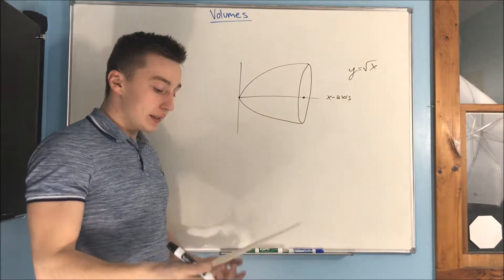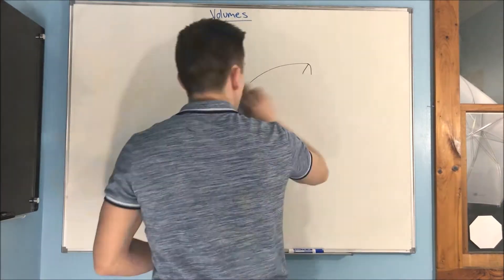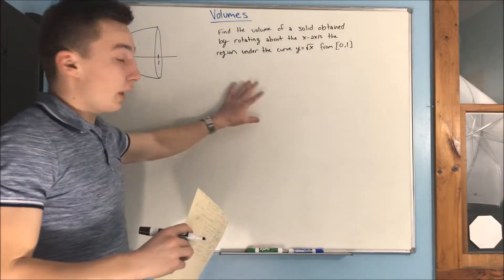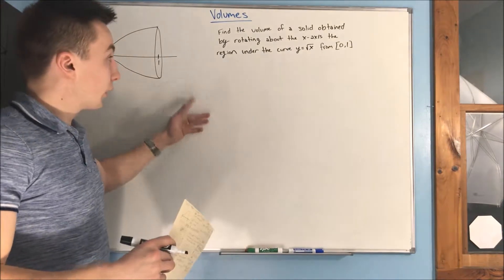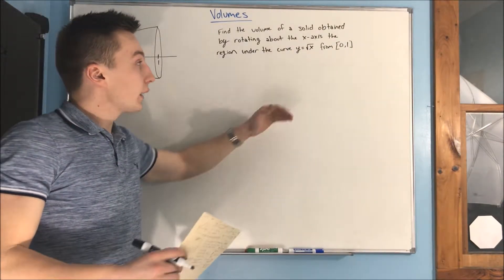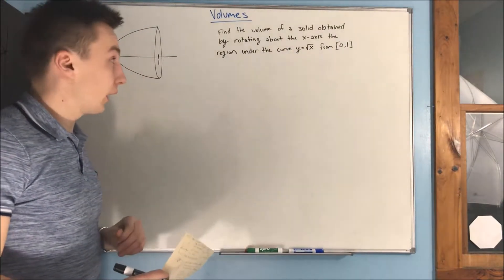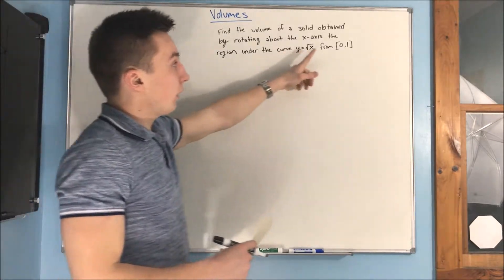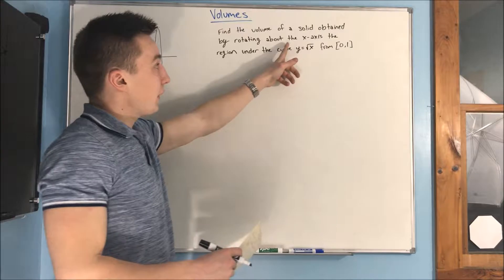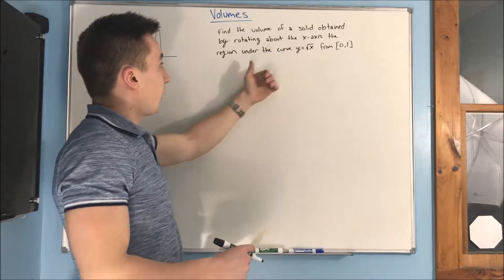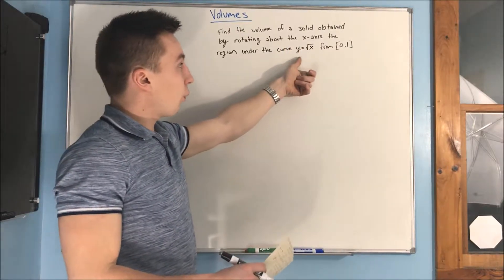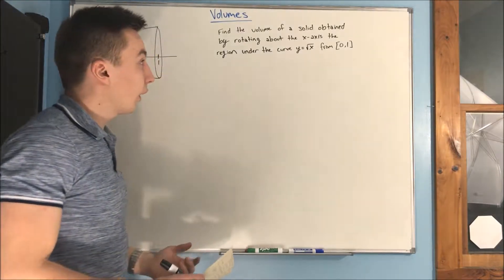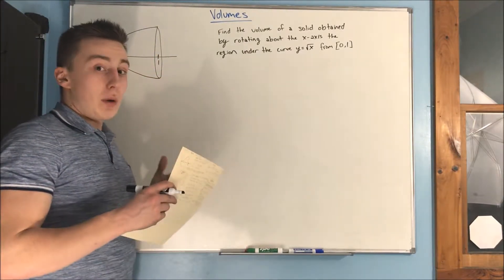Let me show you a more drawn-out example. We're still going to be dealing with y equals rad x — I have that picture still over there. The problem is: find the volume of a solid obtained by rotating about the x-axis the region under the curve y equals rad x from 0 to 1.